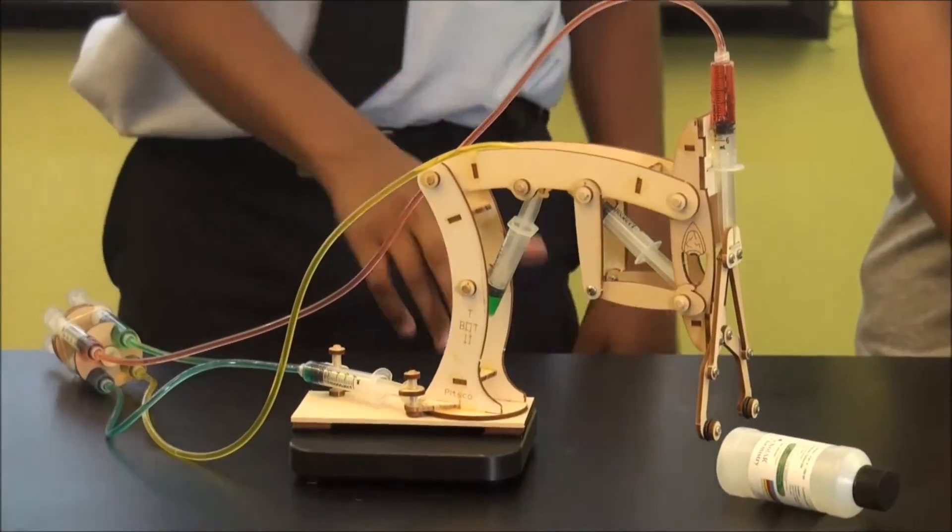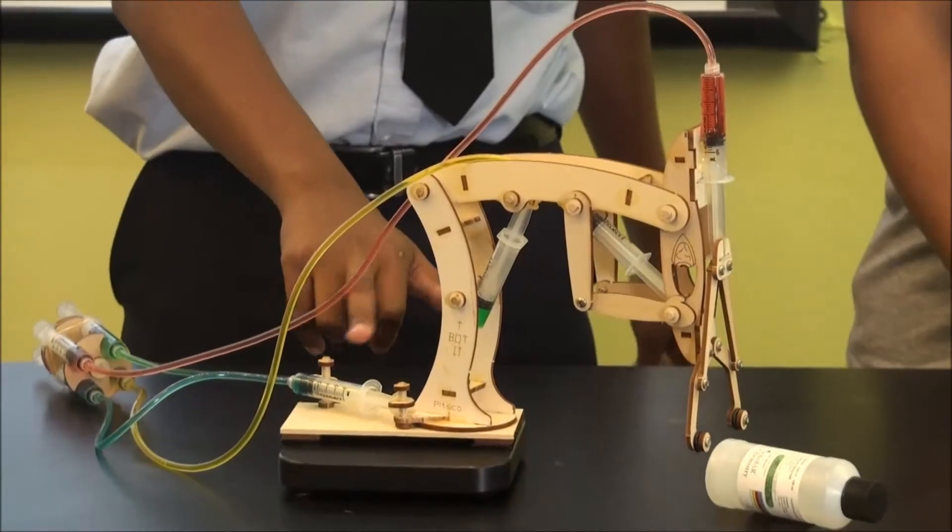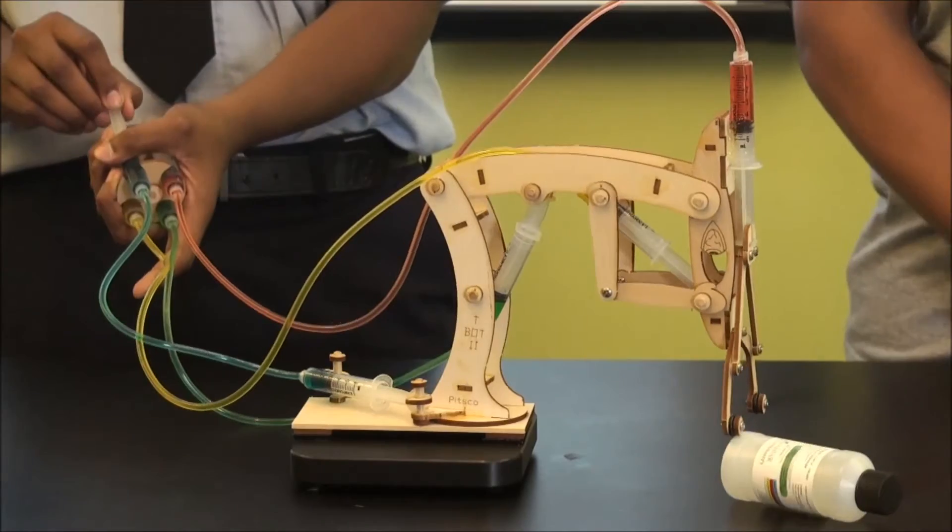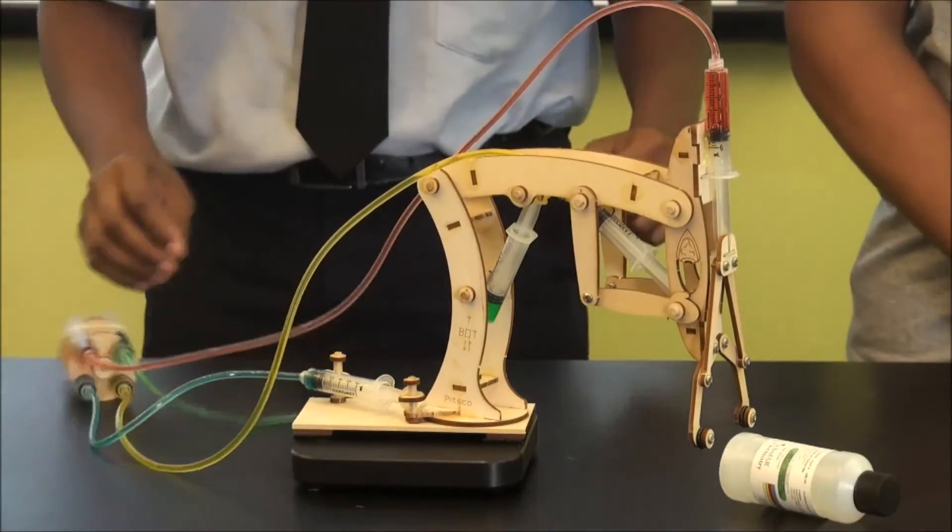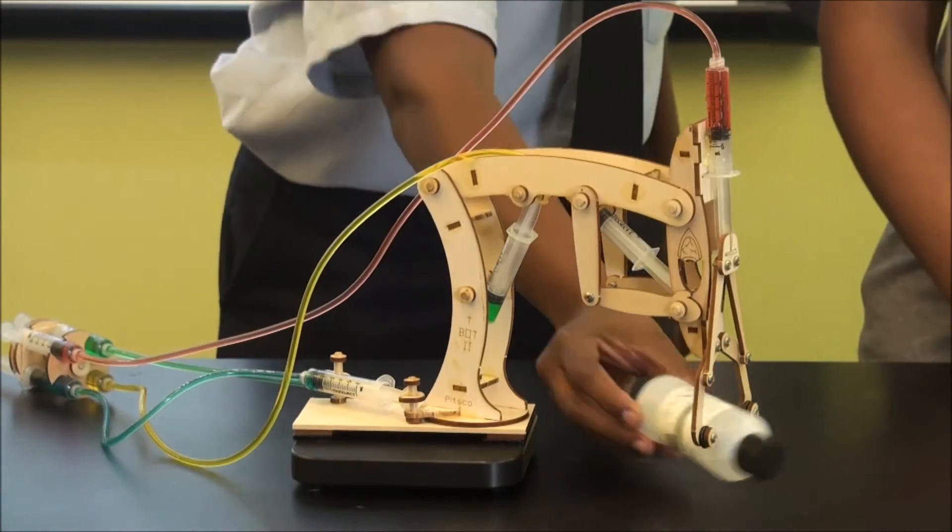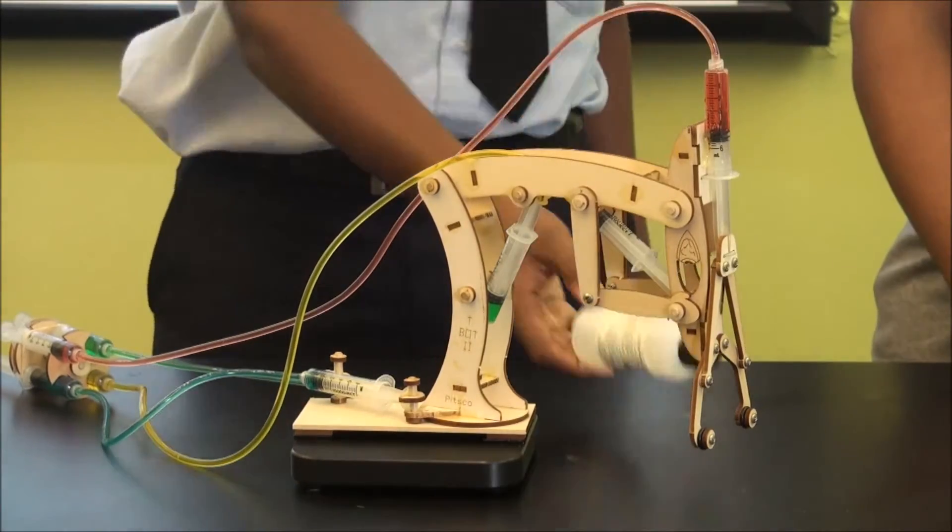It connects points on the platform. This is the platform. These two points right here, they're connected and it helps it move. As you see, it moves from left to right very easily. These are the grips that help hold the solution together and hold the bottle.